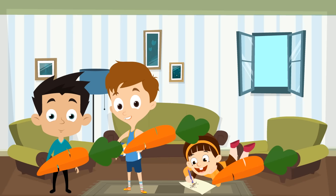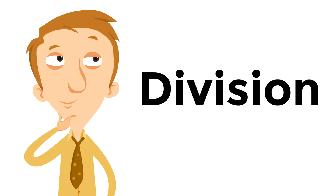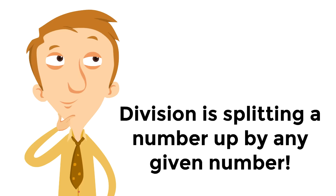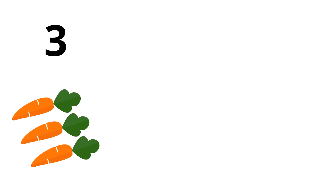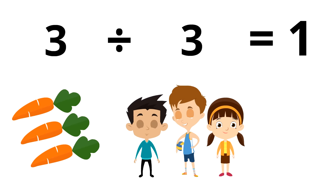Pretty simple, right? Three carrots, three kids, each kid gets one carrot. Did you know we just did division? Division is pretty simple. Division is splitting a number up by any given number — just splitting a number up. There were three carrots and we divided those three carrots by three because there are three people, the three kids that love carrots. The answer of how many carrots each kid gets is one. Three divided by three equals one.